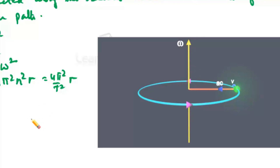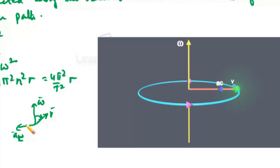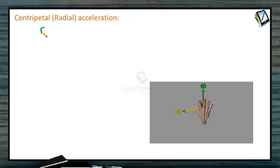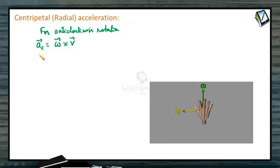Omega is in one direction, centripetal acceleration is in this direction, and tangential velocity is in this direction. We can also write the centripetal acceleration as AC = ω × V by the right-hand thumb rule. So centripetal acceleration will be ω × V for anti-clockwise rotation. This centripetal acceleration is the acceleration of the particle at point P.